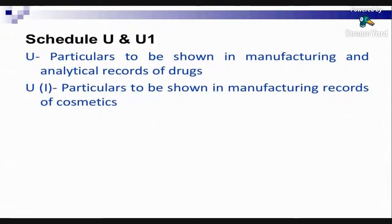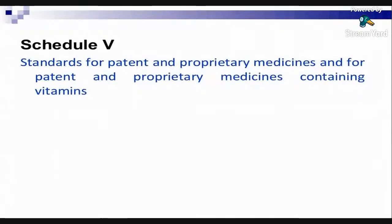Schedule U contains the particulars to be shown in manufacturing and analytical records of drugs. Schedule U1 contains the particulars to be shown in manufacturing records of cosmetics. Schedule V contains different standards for patent and proprietary medicines, including those containing vitamins, which come under Schedule B.